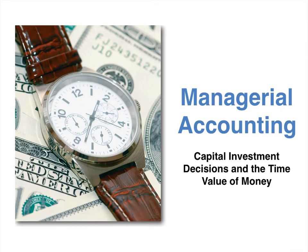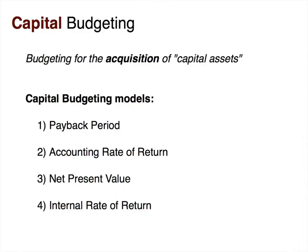Welcome to our capital investment decisions and the time value of money discussion. We're going to be talking about four different capital budgeting models: payback period, accounting rate of return, net present value, and internal rate of return. The first two — payback period and accounting rate of return — are models used for short-term decision making, while net present value and internal rate of return are used for long-term investment decisions.